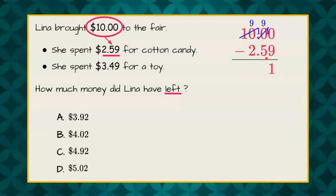9, subtract 5, which is 4. And, I'm going to bring down my decimal point. Then, 9, subtract 2, is 7. So, she has $7.41 after she bought her cotton candy.